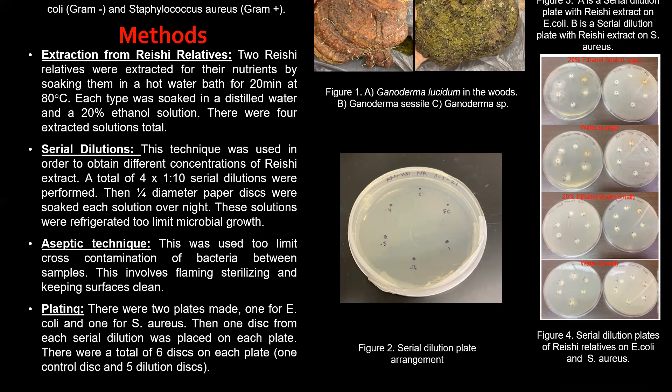Aseptic techniques were used alongside serial dilutions. Aseptic technique limits cross-contamination of bacteria between samples. This is done by wiping down surfaces, always capping your tubes when done, and flaming your tweezers between transfers — limiting cross-contamination from the bacteria and fungi present in the air and on surfaces.